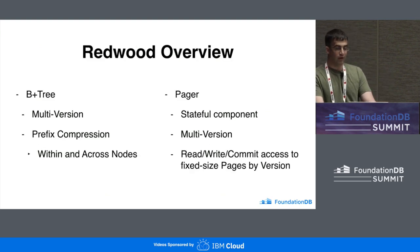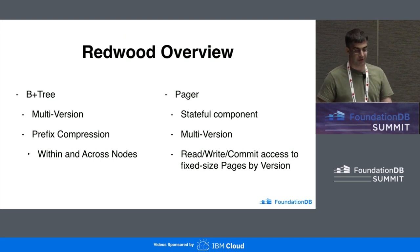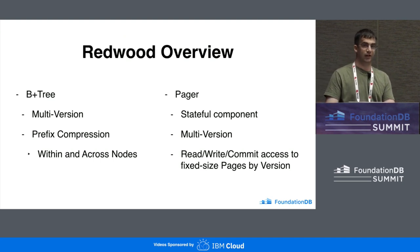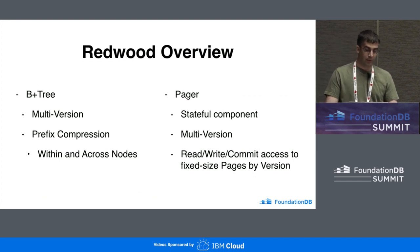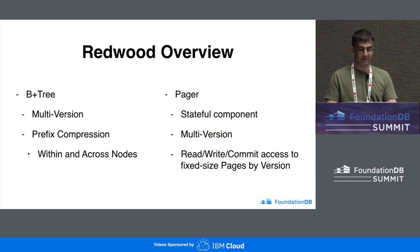A quick overview. Redwood is a B-plus tree. It's multiversion, so it can contain different values for the same keys at different versions, and it employs prefix compression both across nodes and also within nodes themselves.